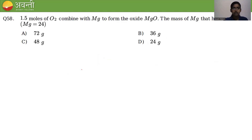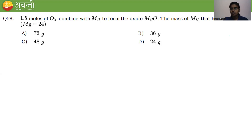Coming to question number 58: 1.5 moles of O₂ combines with Mg to form the oxide MgO. We are asked to find the mass of magnesium. Before solving, we write and balance the equation: Mg + O₂ → MgO, balanced as 2Mg + O₂ → 2MgO.